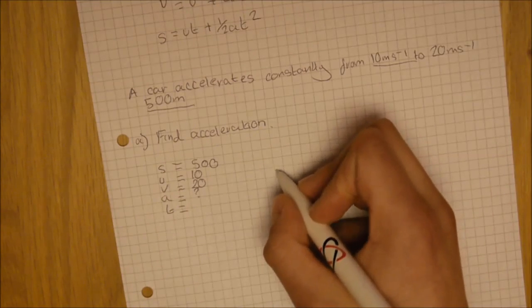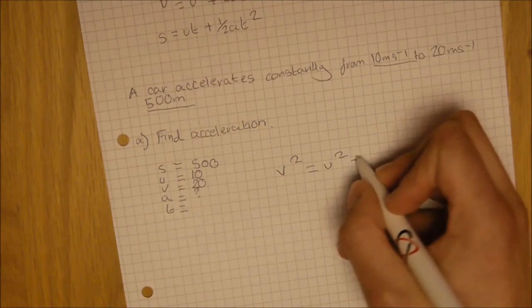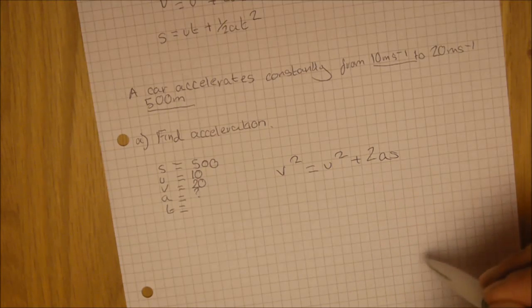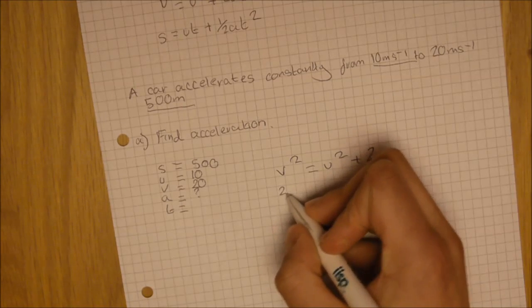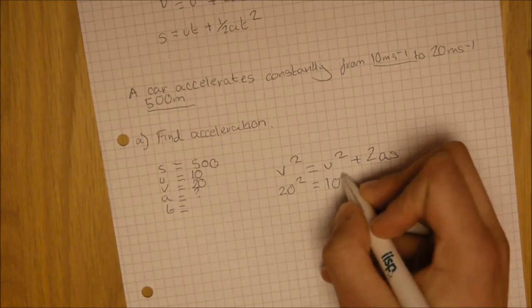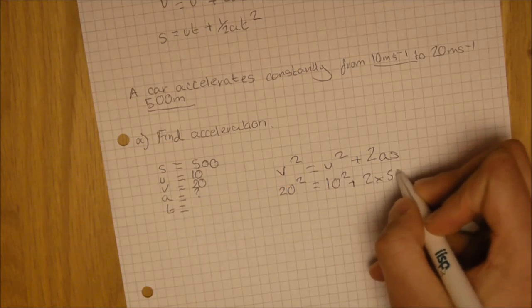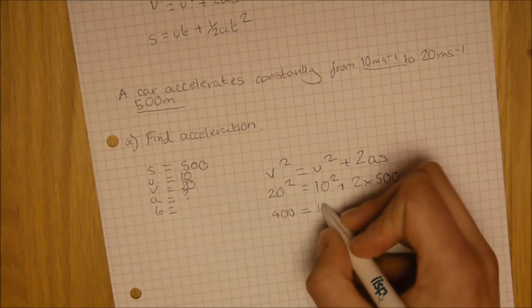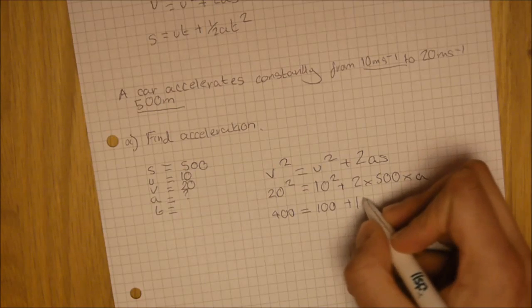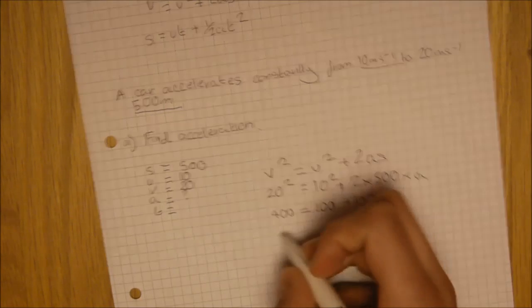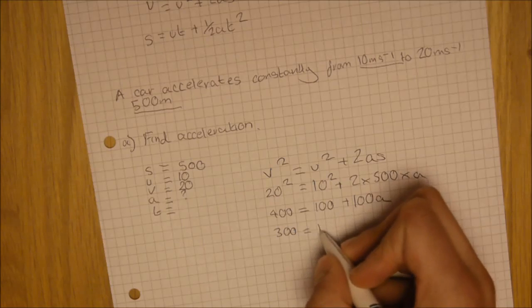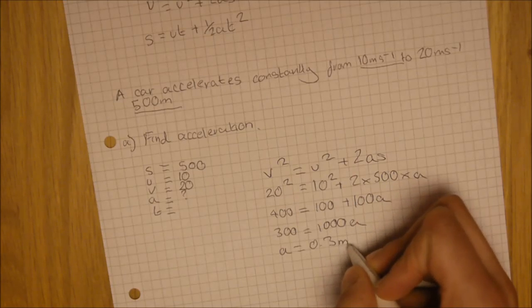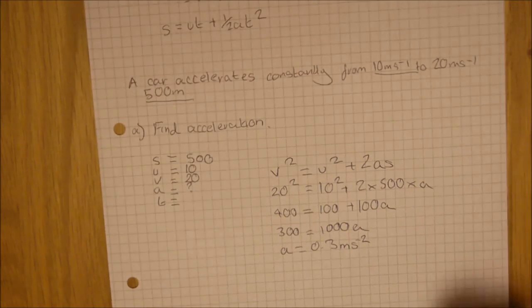Therefore, we know the equation we need to use is V squared equals U squared plus 2AS, as we can use V, U, and S and we need to find A. So, let's start. Substitute them all in. 20 squared equals 10 squared plus 2 times 500 times A. So, 400 equals 100 plus 1,000 A. 300 equals 1,000 A. A equals 0.3 meters a second squared.